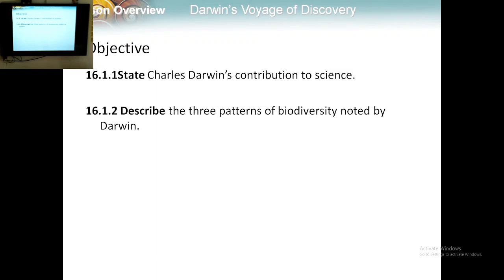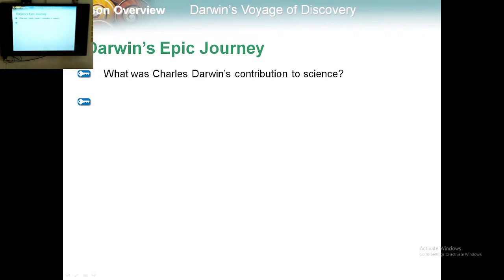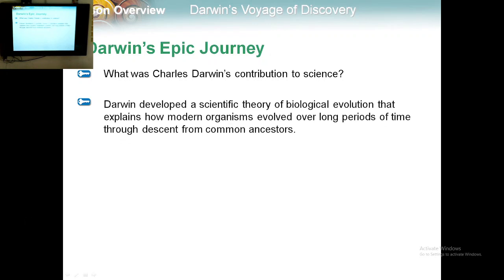We will describe the three patterns of biodiversity noted by Darwin. What was Charles Darwin's contribution to science? Darwin developed a scientific theory of biological evolution that explains how modern organisms evolved over long periods of time through descent from common ancestors.